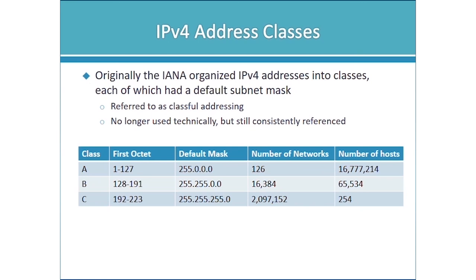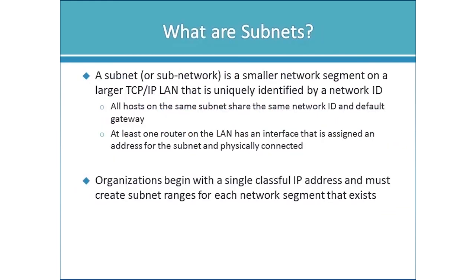Even though classful addressing isn't used anymore, you need to be able to look at the first octet, recognize the class, and identify the default mask. That's important from a subnetting perspective. A subnet or subnetwork is simply a smaller network segment on a larger TCP/IP LAN, and each subnet is uniquely identified by a network ID.